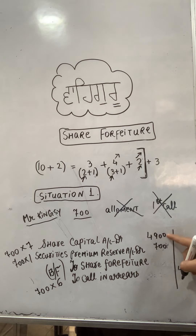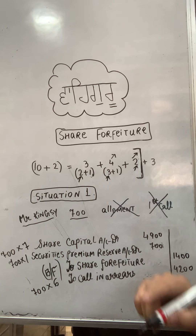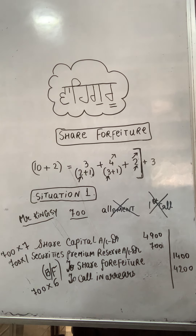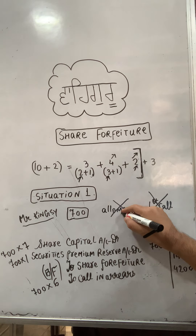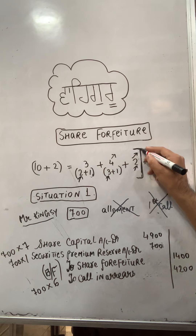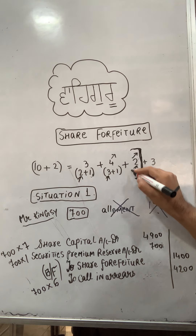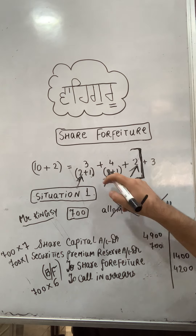So the totals for Situation 1: Share Capital debit is 4900, SPR debit is 700, and the credit side is 4200. The total on the debit side is 5600, minus credit 4200, giving a balancing figure of 1400 for Share Forfeiture. This was Situation 1 — Kingsy's shares forfeited by Reliance.